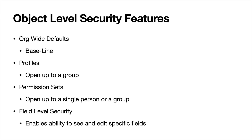The four main features for object level security are org-wide defaults, profiles, permission sets, and field level security. It starts with a baseline org-wide defaults, opening up access to specific objects like accounts, contacts, and leads. If those are all open with read/write, then anyone in the org can come in and edit it, which can mess up your data and be a really big problem. If these were private, we could start building upon that with the other features to open it up to only the people that need that access. Org-wide defaults are going to be either private, public read, or public read/write.